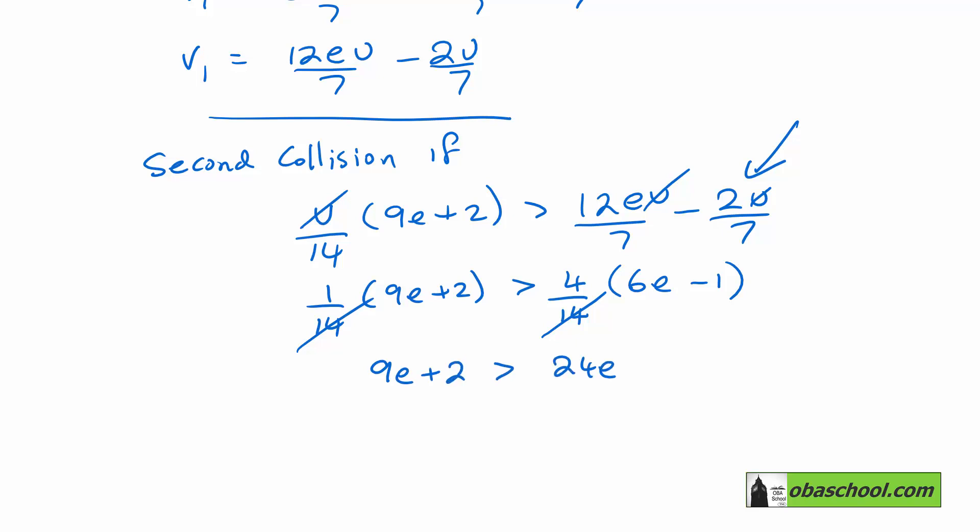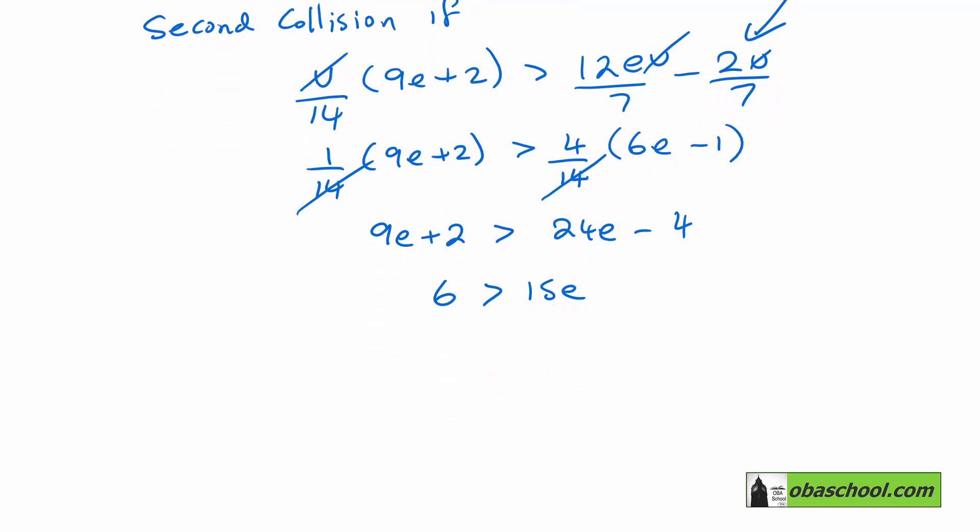So that gives us 6 is more than 15E. And we can rearrange that into E being less than 6 over 15, which simplifies to 2 fifths. But remember that E has to be a positive constant and therefore E is between 0 and 2 fifths.